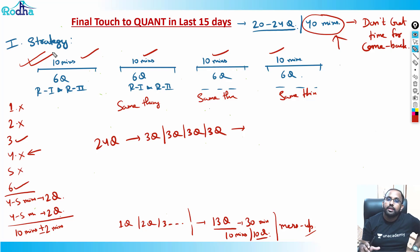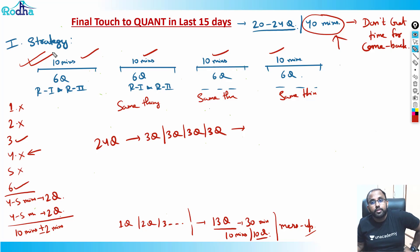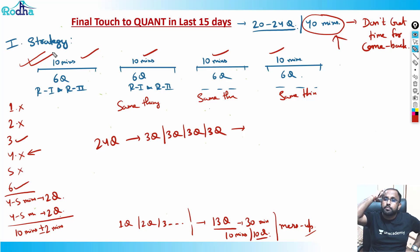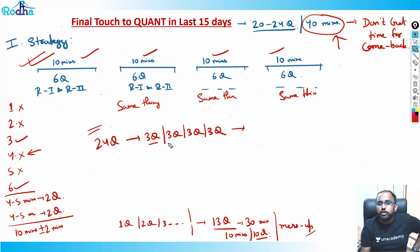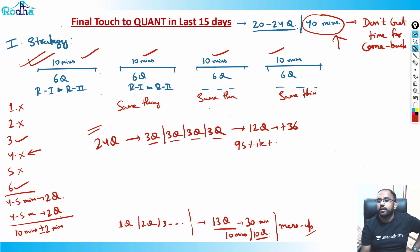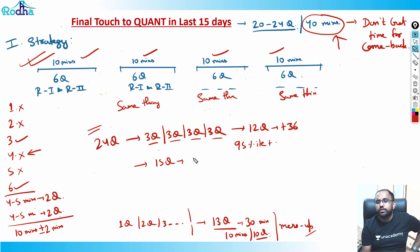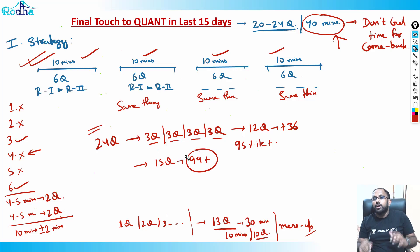This slot strategy — dividing into 10-minute blocks — is the best approach for short 30 to 40-minute papers. I wouldn't suggest it for a 60-minute paper, where I previously recommended a different round-one round-two strategy. For 40 minutes, this is best. If you solve three questions per slot — that's 12 questions total — you can back yourself to score above 95 percentile. Around 15 questions should get you 99-plus percentile.